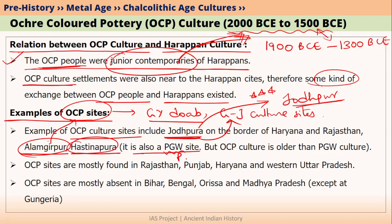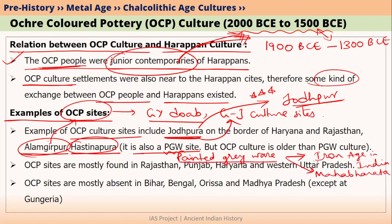Painted Grey Ware is basically associated with the Iron Age in India and also associated with the Mahabharata period. We will talk about Painted Grey Ware when we discuss the Iron Age in India. Since Painted Grey Ware is mainly associated with the Iron Age, OCP culture is older than PGW culture, as OCP culture is a Copper-Stone or Bronze Age culture, not Iron Age.